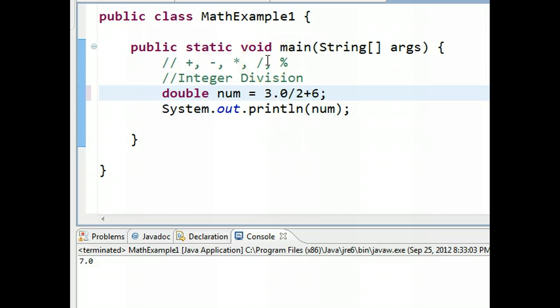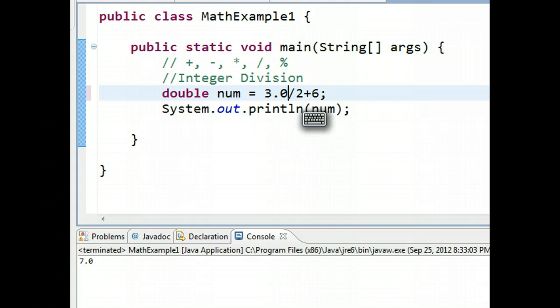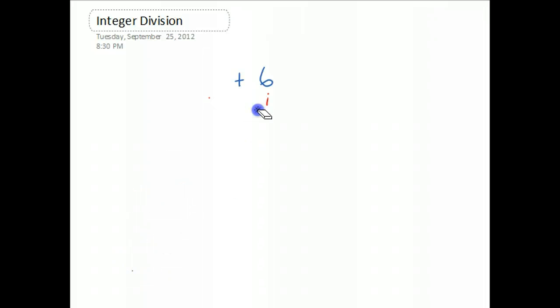So now, let's do this one: 3.0. So if I pop this open again, let's erase what we drew here. So now we have 3.0 divided by 2 plus 6.